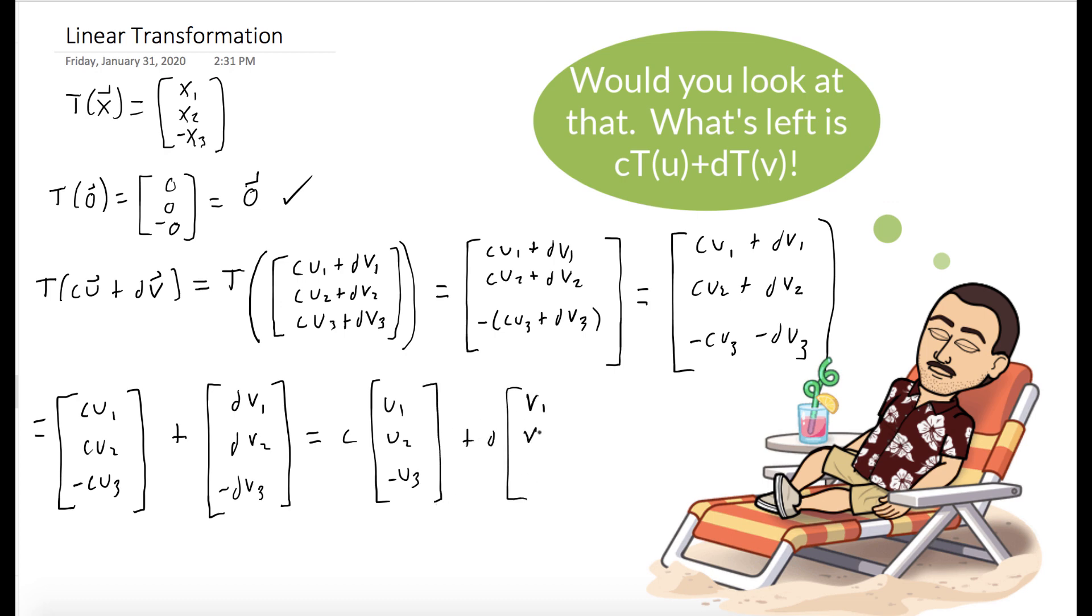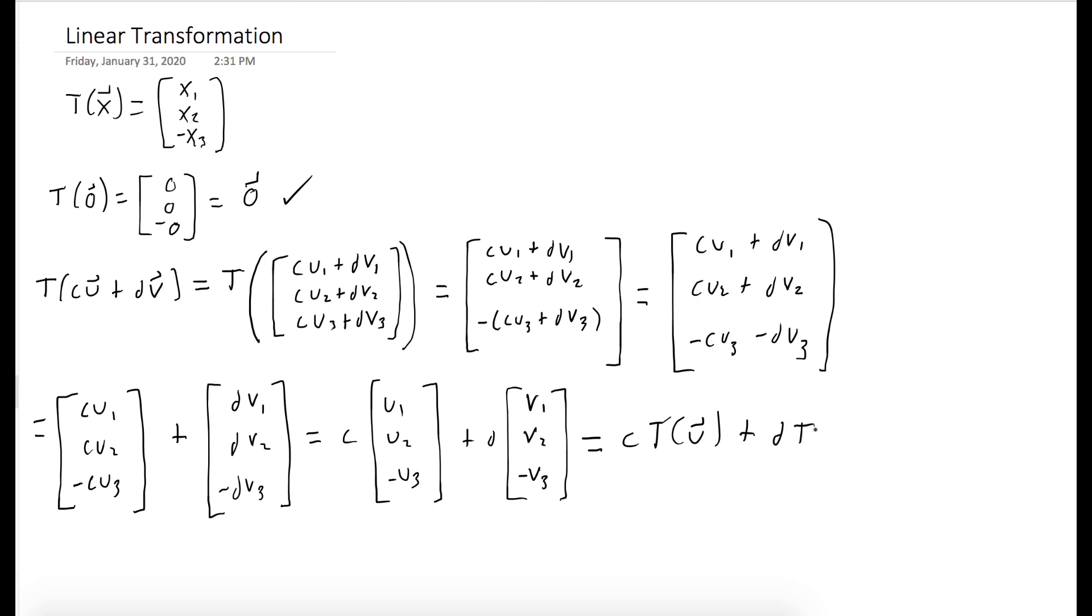And so we have C times this vector U1, U2, negative U3, that's exactly T of U. And the other term is exactly T of V. So we're done. We just showed that T is linear.